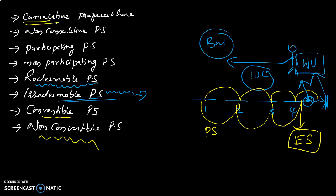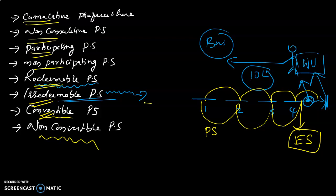Quick recap: Cumulative preference share, non-cumulative preference share, participating preference share — which shares in excess profit — non-participating preference share, redeemable, irredeemable, convertible, and non-convertible preference shares.